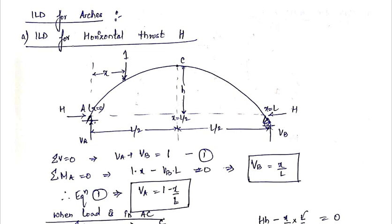In the previous lecture, we studied about the influence line diagrams — what they are, their different uses, and how to draw the ILDs for the support reactions. Now, in this lecture, we will study how to draw the ILDs for the horizontal thrust for a three-hinged arch.